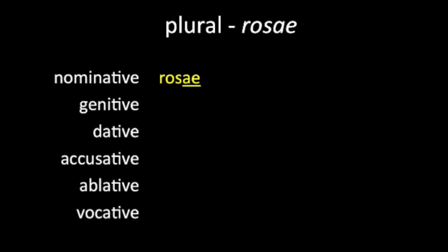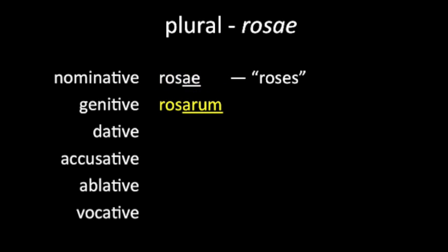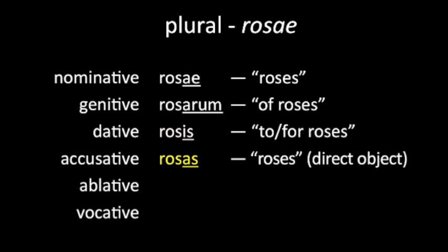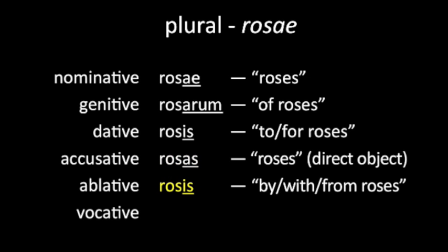There are also the plurals: 'rosae' — roses; 'rosarum' — of roses; 'rosis' — to or for roses; 'rosas' — roses as direct object; 'rosis' — by, with, or from roses; and 'rosae' — O roses.